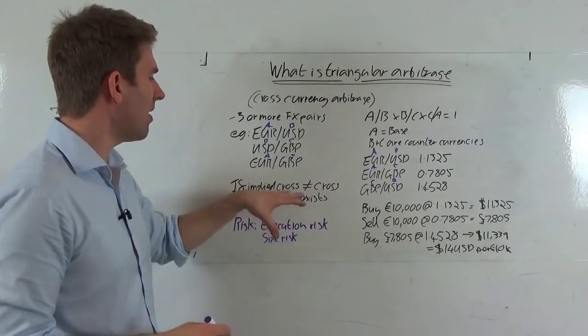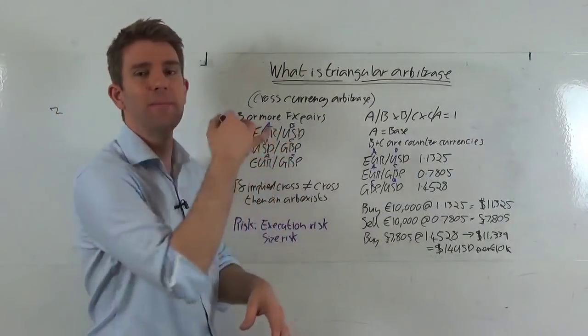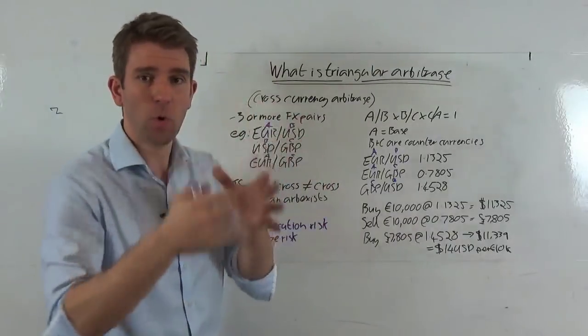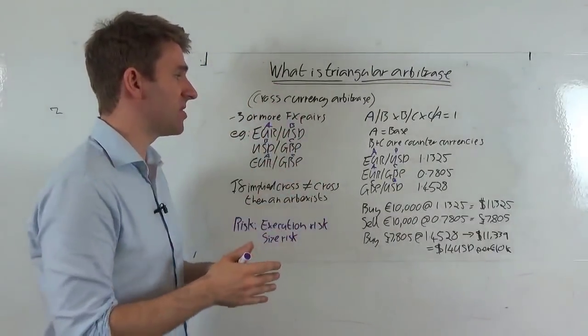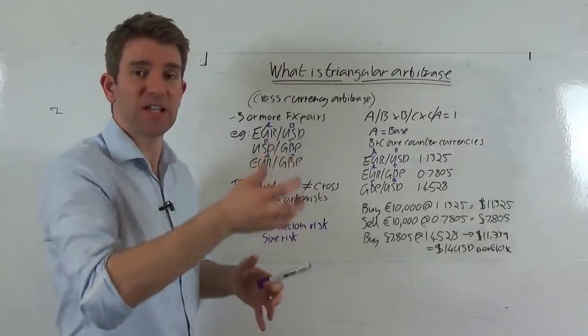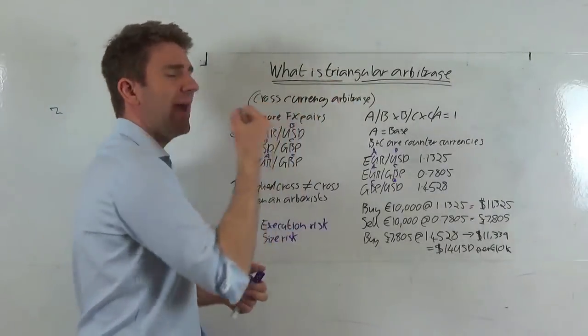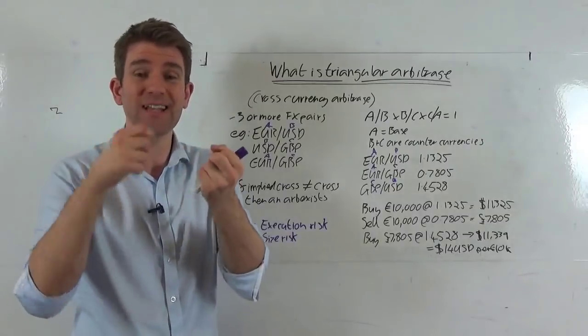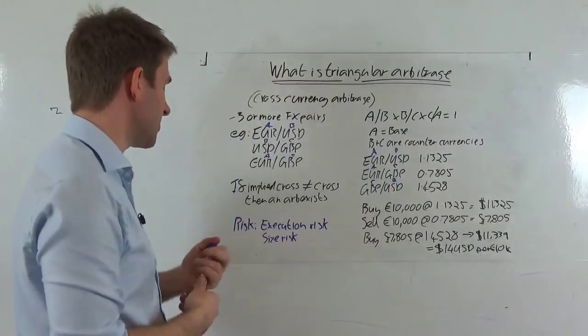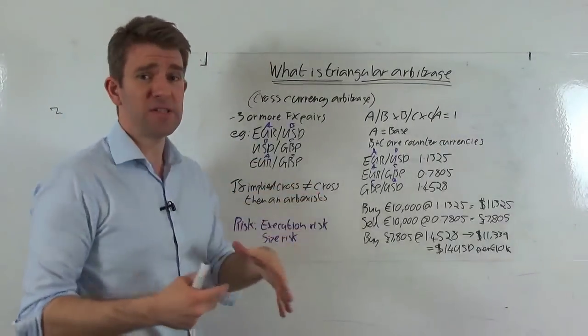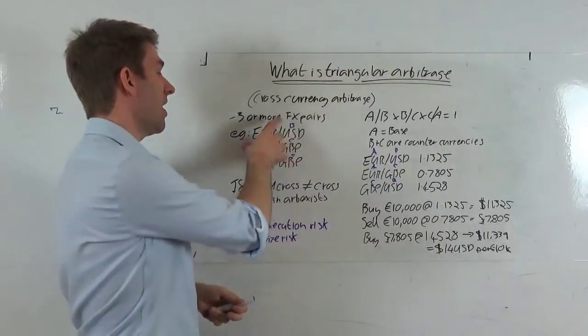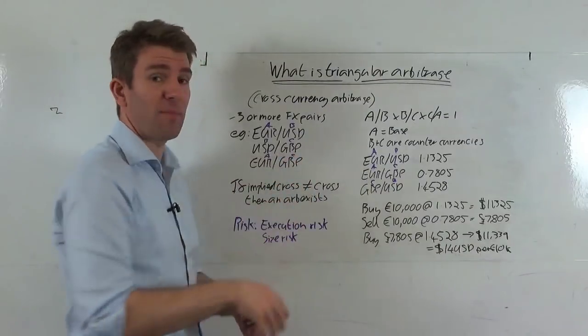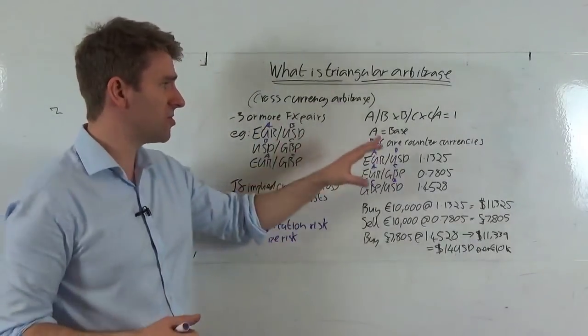So the idea is if the implied cross - don't forget guys we're quoting in base and counter or quote currency, so we've got a base currency and then we've got a quote currency, we've got a counter currency. So that's always going to give us the link and that's the thing we have to often get our head around with FX is that we have one instrument but it's still two currencies and that's why this arb opportunity exists. So if the implied cross, which basically the implied price of the cross based on the other two, is not equal to the actual cross quote, then an arbitrage opportunity exists. Best thing to do is to run through an example.